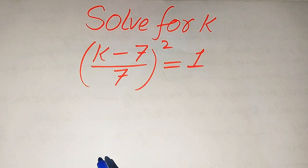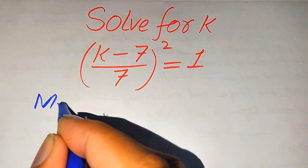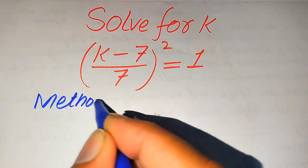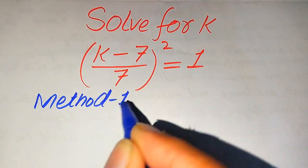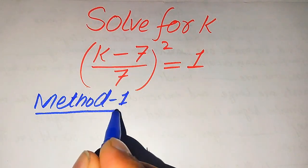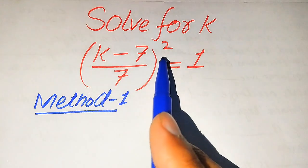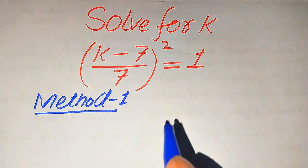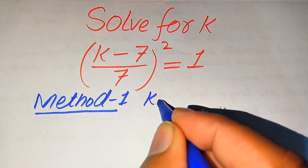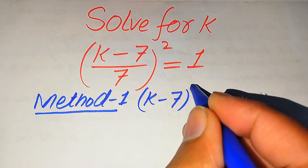Now we move towards our first method. In the first method, we just use nice algebraic techniques or algebraic formulas to solve this problem. First, we need to apply the square sign separately on the numerator as well as the denominator.